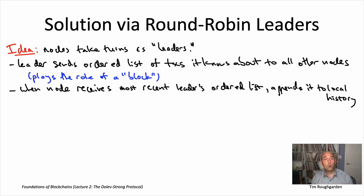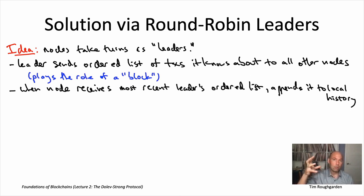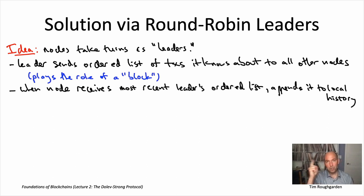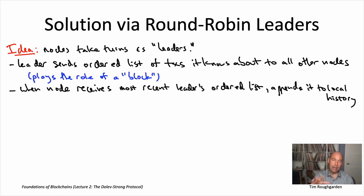That's the whole protocol. The code that a node is running does two things: it listens for the most recently broadcast ordered list of transactions by the previous time step's leader and, when it receives it, tacks it on to the end of its local history. And secondly, it keeps track of whether it's currently the leader. For the time steps where it is the leader, it assembles its ordered sequence of pending transactions and broadcasts that to everybody else.